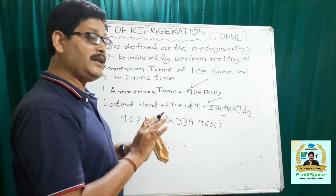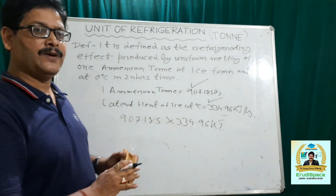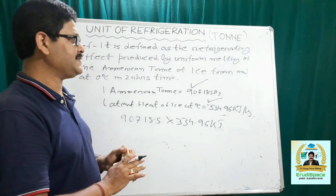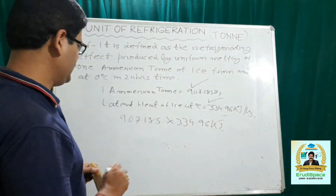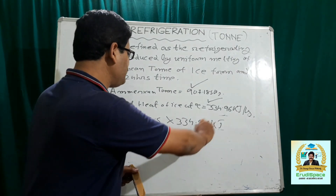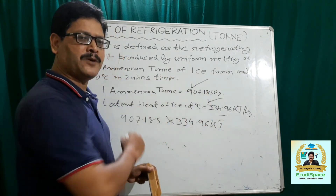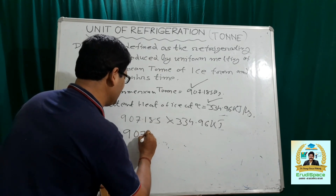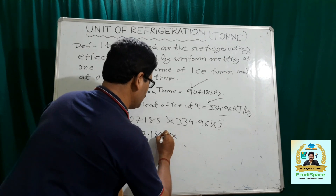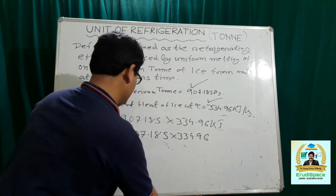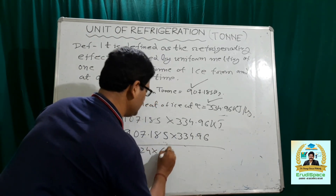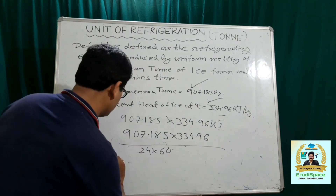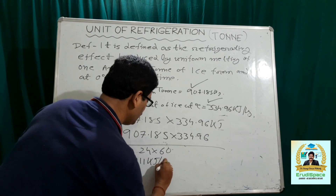Here we are only considering the latent heat removal, because from the definition itself, only the refrigerating effect equivalent to melting of one American tonne of ice from and at 0 degrees Celsius is being considered. This heat removal is over 24 hours time. In one minute, the amount of heat removed is 907.185 multiplied by 334.96, divided by 24 multiplied by 60 — because in one day you have 24 hours and in one hour you have 60 minutes. That is approximately equal to 211 kJ per minute.